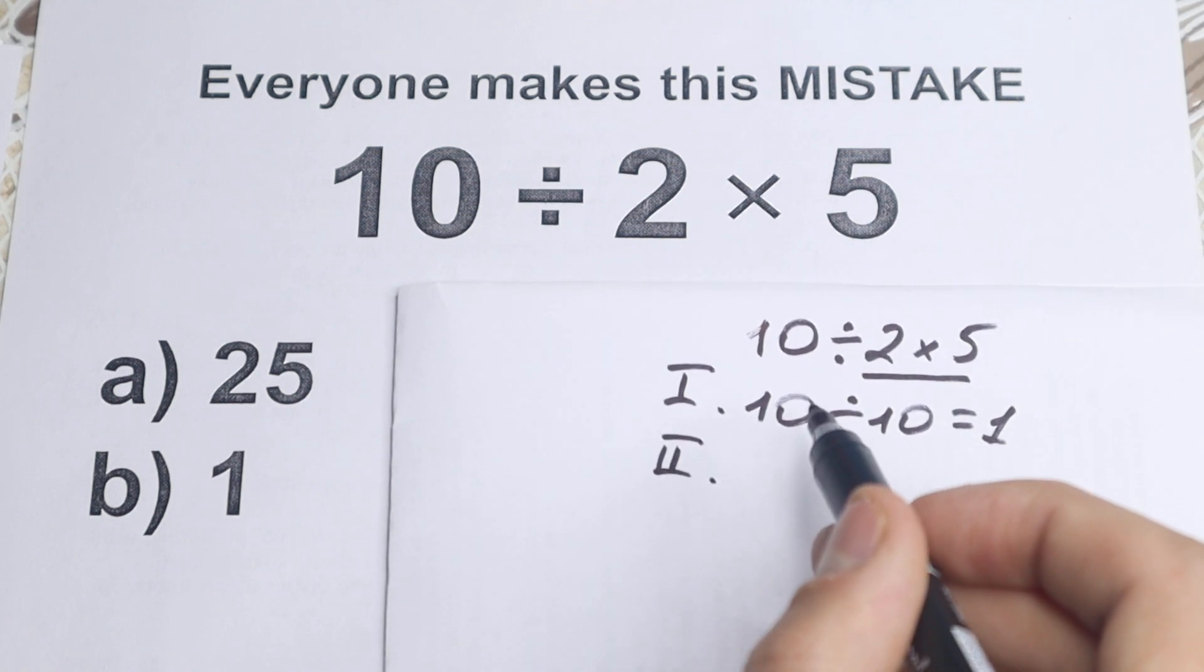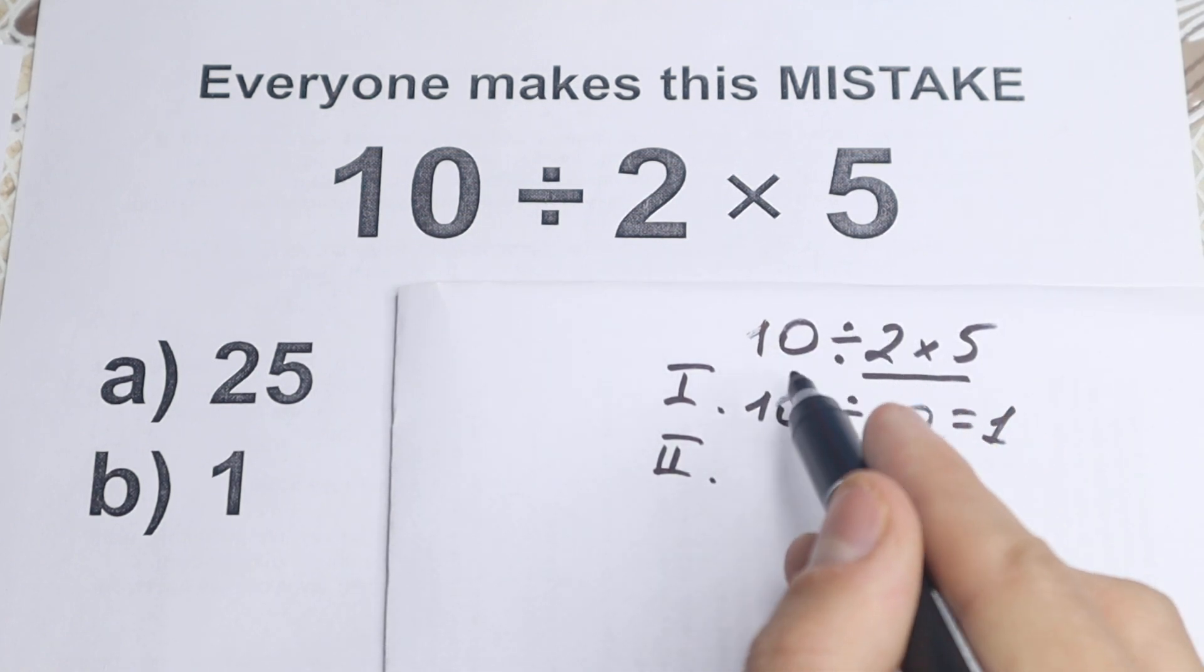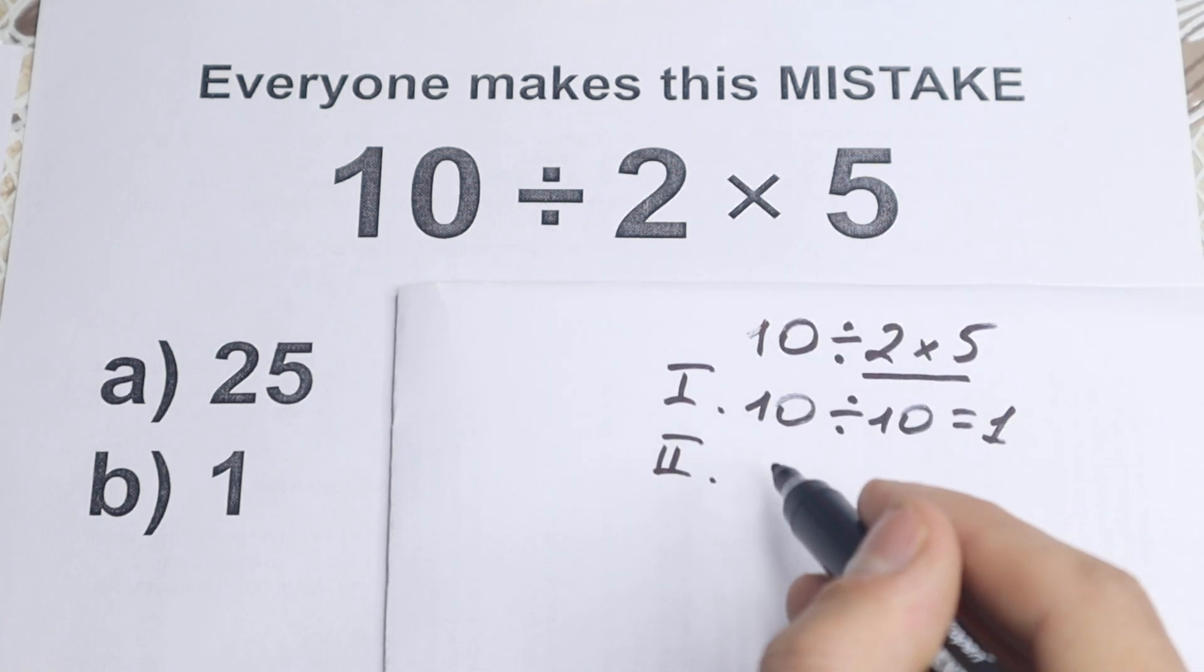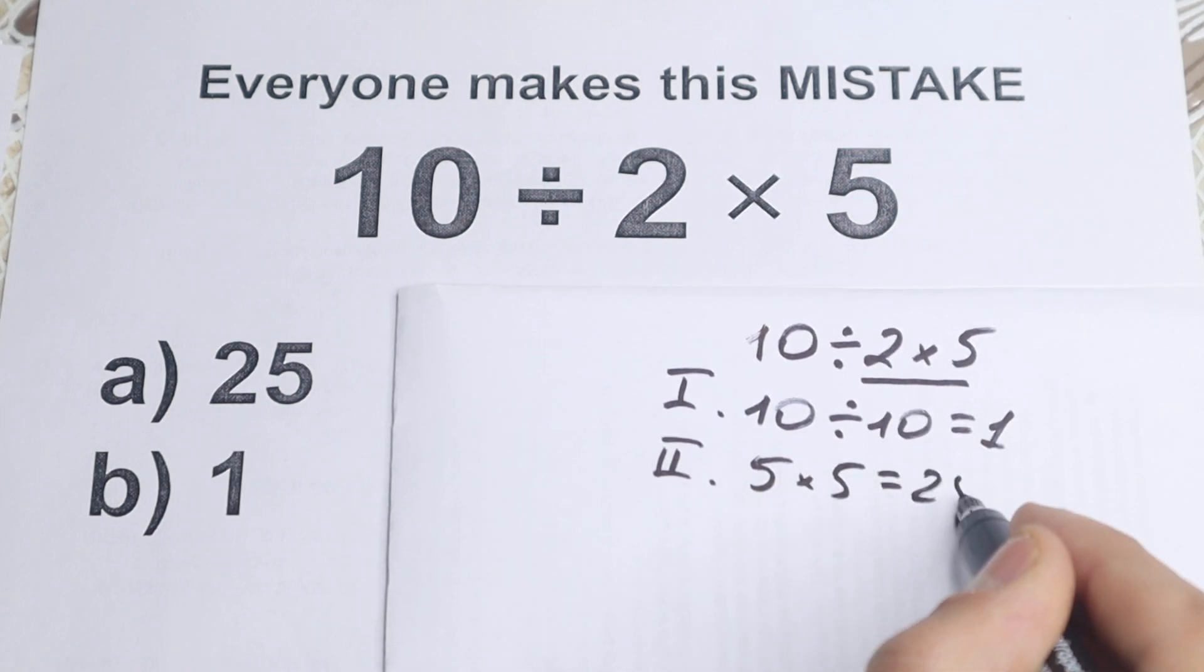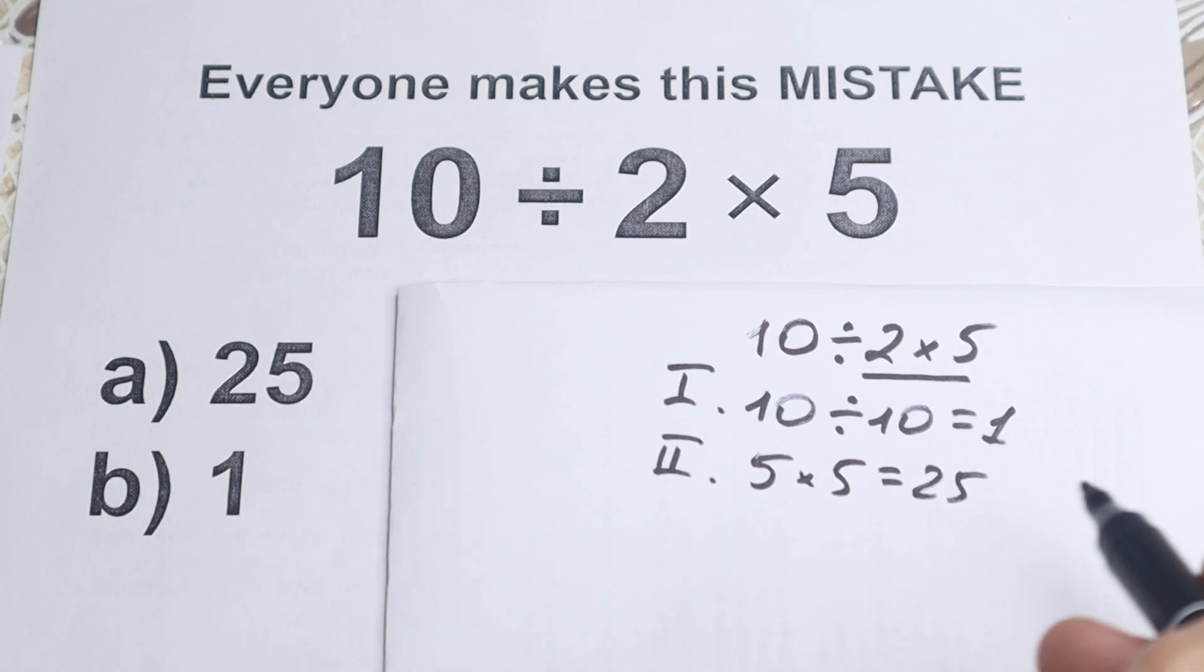The second group is division first. So if you divide first, we have 10 divided by 2 equal to 5, and 5 times 5 equal to 25. So as you can see we have this option right here on the left hand side. But which one is the correct option?